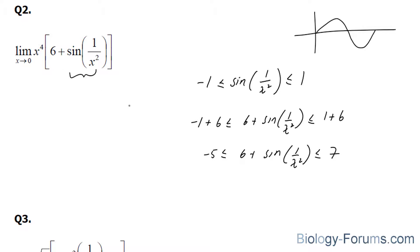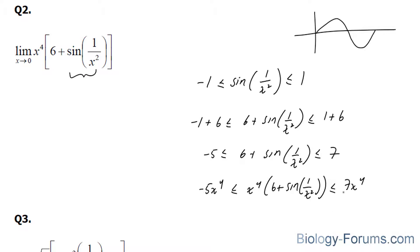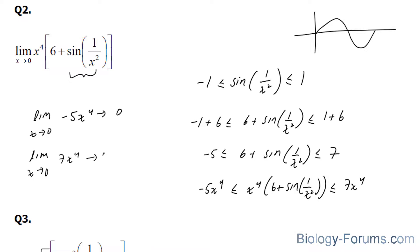Next, we multiply every component by x to the power of 4, giving us negative 5x to the power of 4 and 7x to the power of 4 as the outer bounds. Taking the limit of each bound as x approaches 0, we get 0 for both. So therefore, by the squeeze theorem, the limit of this complicated function also goes to 0.